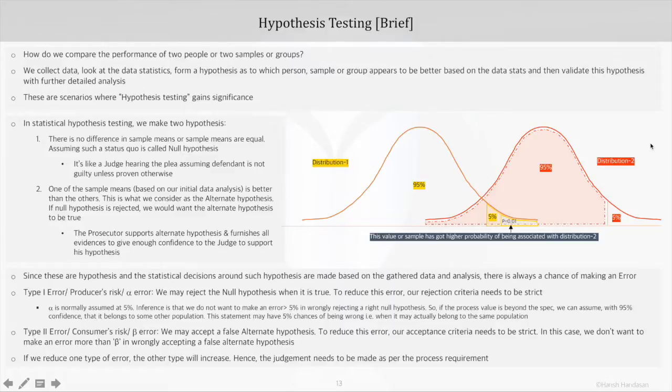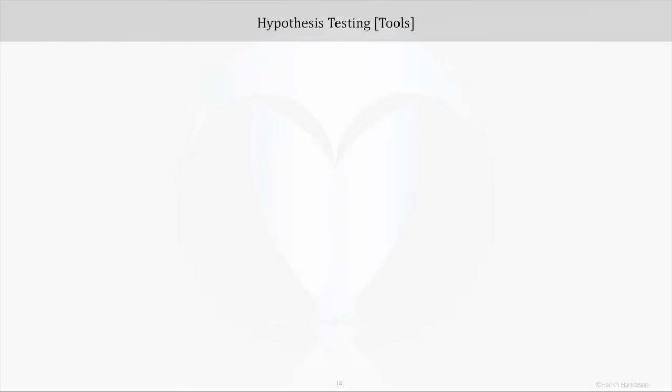Which still in this case may be acceptable to us. So the choice of which criteria needs to be made stricter will depend on the criticality of the process and the objective that we want to achieve from it. Now depending on what we are comparing and testing, the tools in hypothesis testing will differ. The choice of the right tool or the right option is the first important step in this testing.